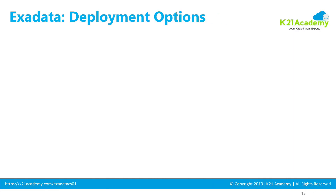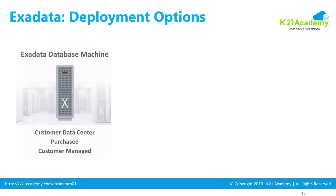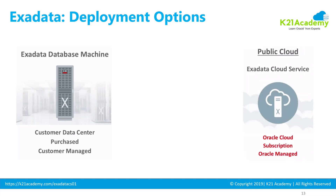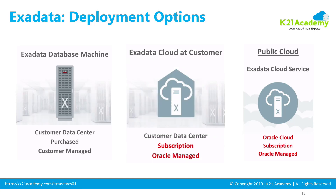To do a quick recap: for deploying Exadata you have three options. Option one: purchase the Exadata machine in the traditional style. Option two: subscribe to Exadata Cloud Service (ExaCS) on Oracle's public cloud. Option three: Exadata Cloud at Customer (ExaCC), running Exadata machines on your premises on a subscription model.